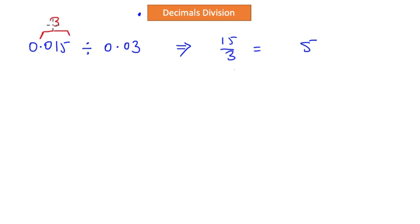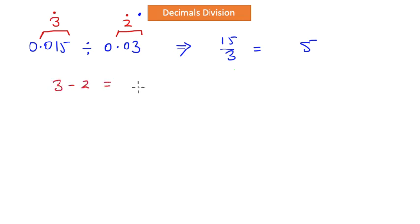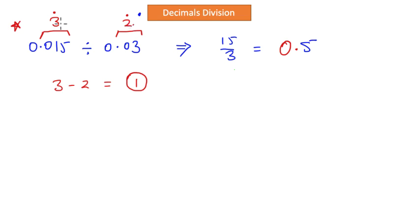Now let's take care of the decimal part. I have three decimal digits in my dividend and two decimal digits in my divisor. In division, we subtract the number of decimal digits in the divisor from the number of decimal digits in the dividend: three minus two equals one. That means one decimal digit should be present in my final answer. The result was 5, so placing the decimal gives us 0.5 as the final answer.